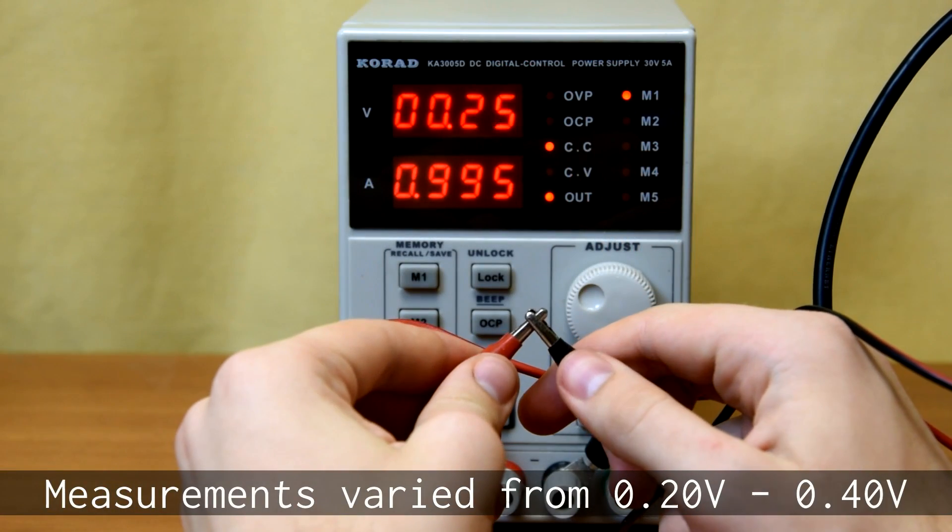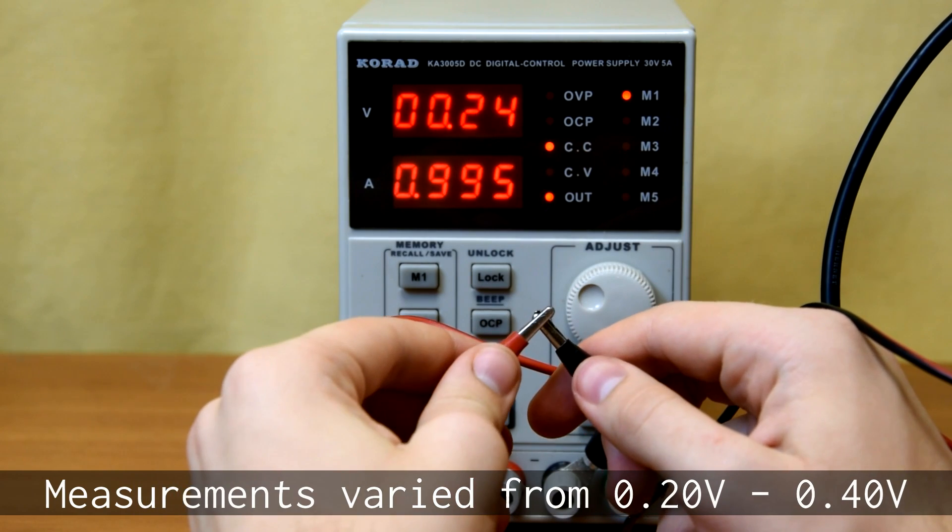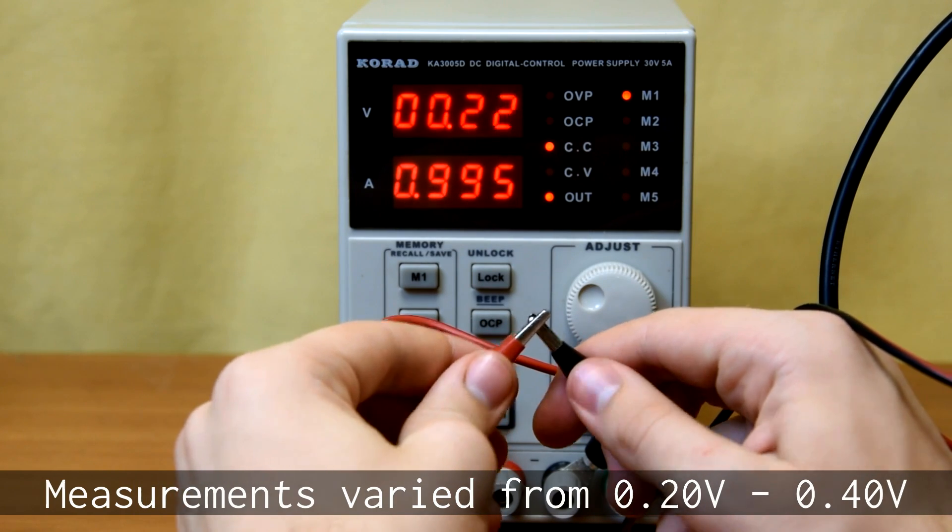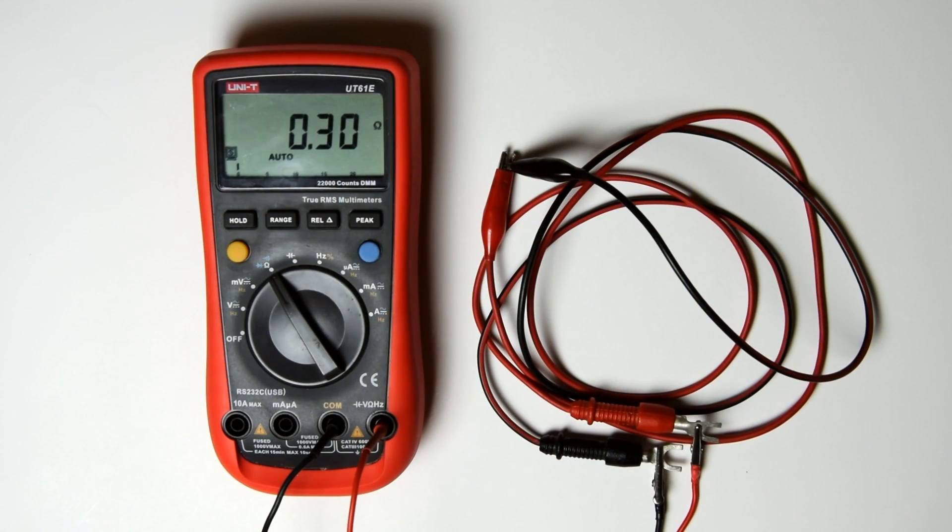This story started when doing some testing for the next video. As it turned out, the leads that I got with my power supply had a voltage drop of a third of a volt at 1 ampere. A quick measurement with a multimeter confirmed my suspicions, it was time to replace them.